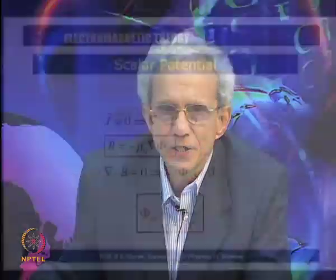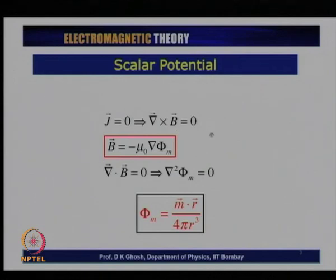For example, if I do not confine myself to the location where there are currents — for example, there is current flowing, but I am looking at the magnetic field in the space around it which does not have a current — then in that region the current density is zero. If the current density is zero, del cross B, which was shown earlier to be equal to mu-0 times J by Ampere's law, turns out to be zero.